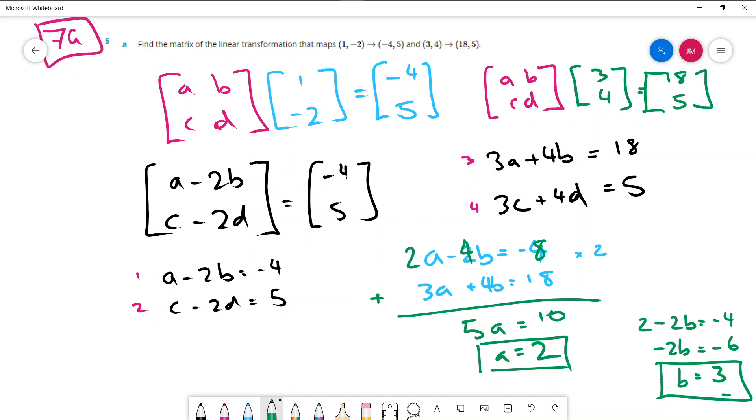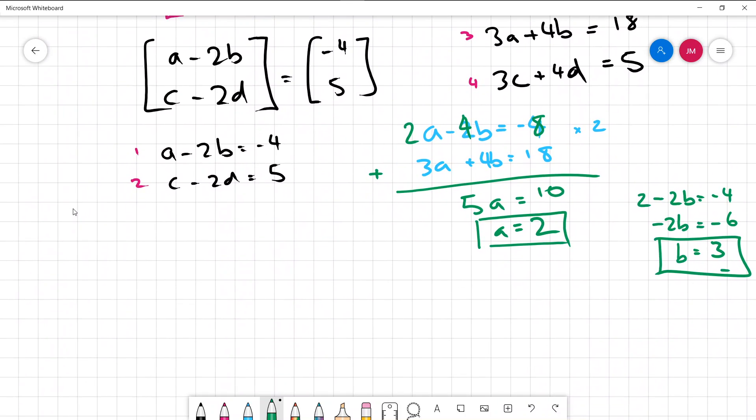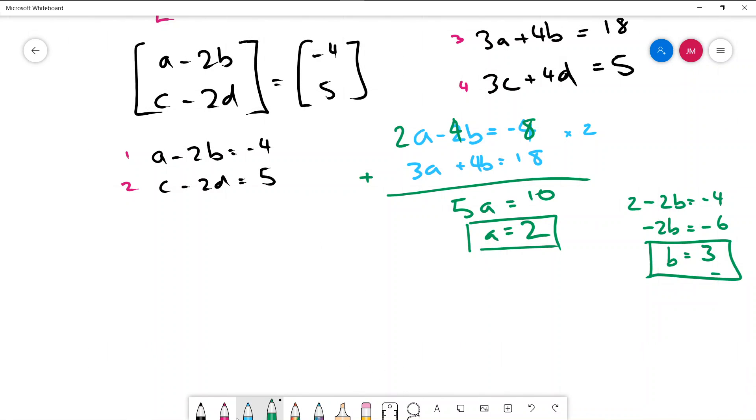Then we just need to repeat the same thing for C and D. So let's use equation 2 and 4. So I'd get C minus 2D equals 5, 3C plus 4D equals 5 also. And let's again multiply this one by 2 so we can cancel off those D's. So that'll become 4, 2 and 10. So again I'm going to add them. So I get 5C equals 15. So C equals 3.